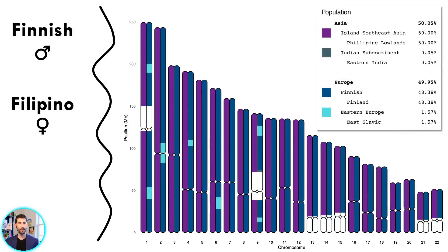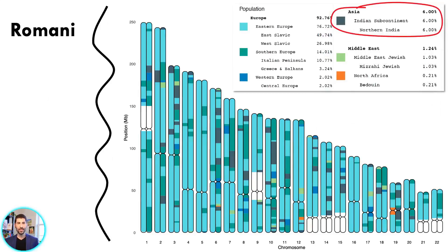There are many interesting mixes of people — for example, this is someone with a Finnish dad and a Filipino mom. And there are mixes that go much farther back. The Romani people originally are from North India, and you can see this person has about 6% Indian segments from North India, scattered across their genome in gray. Most Romani people have ancestry that involves local populations, and this person is from Eastern Europe, so as you'd expect, they have a lot of East European or Slavic ancestry as well.